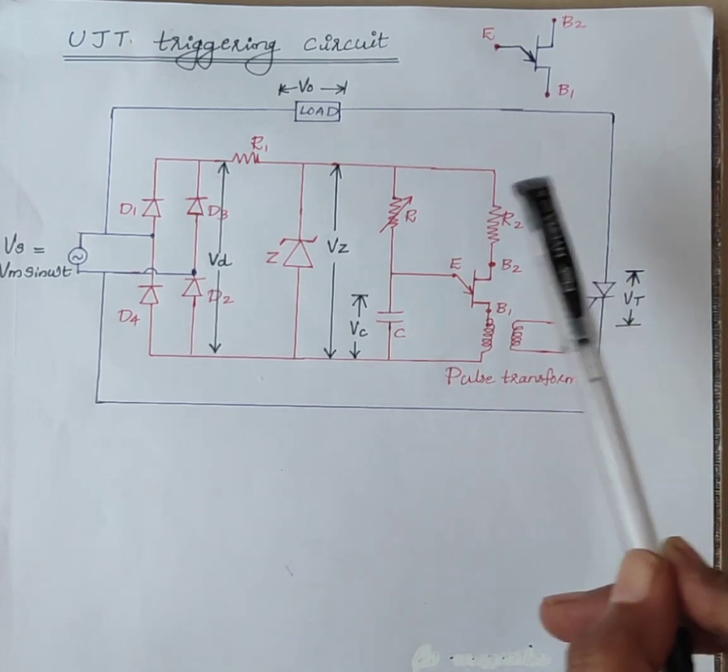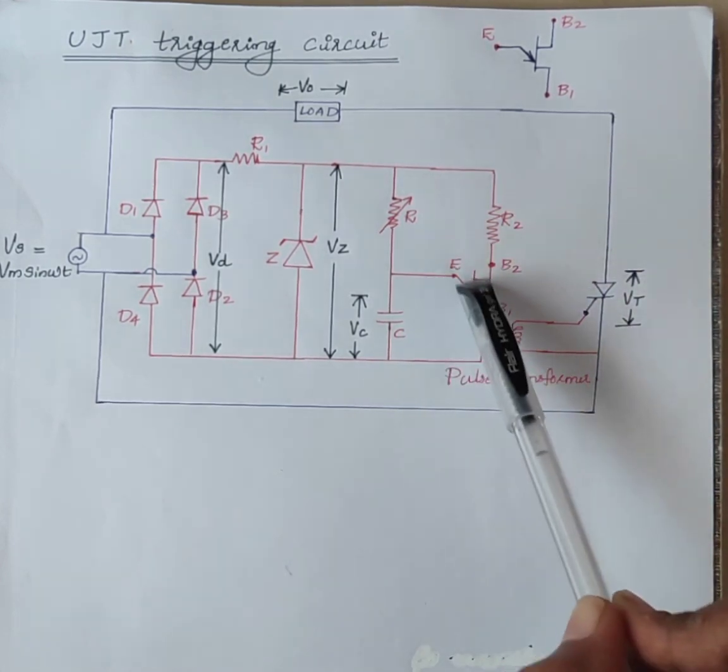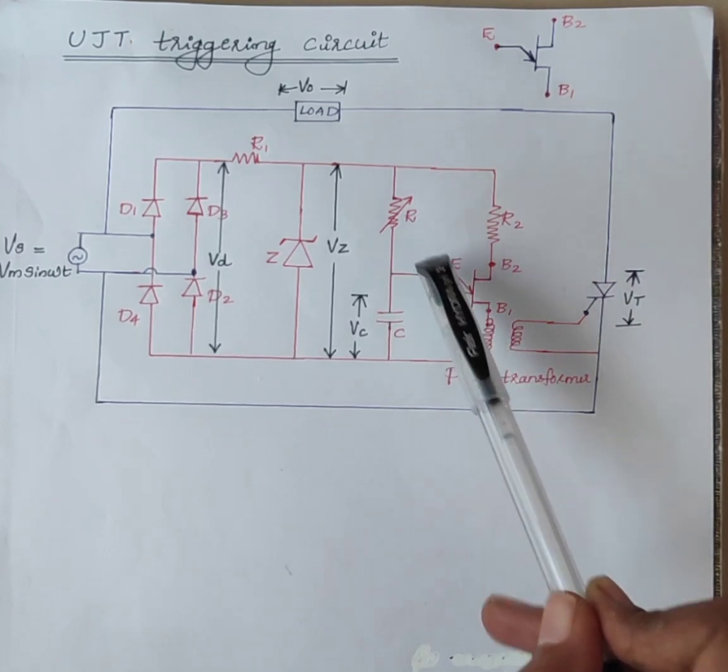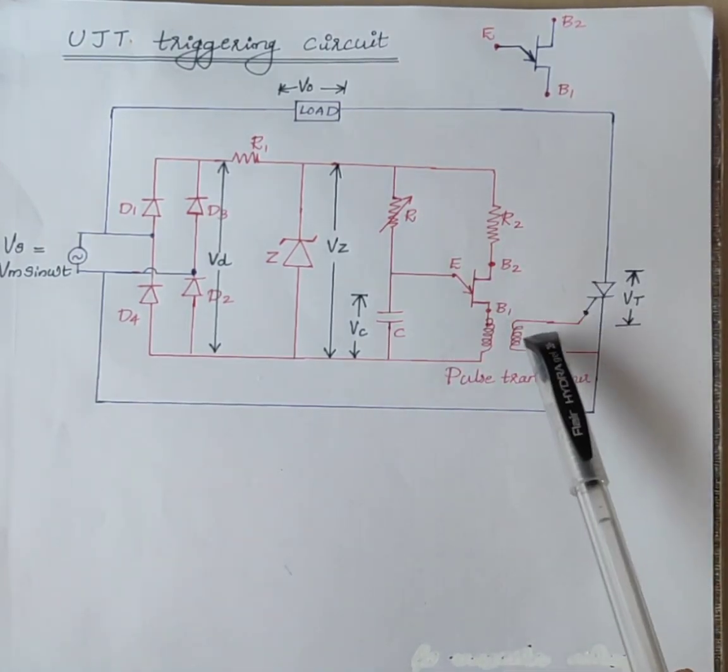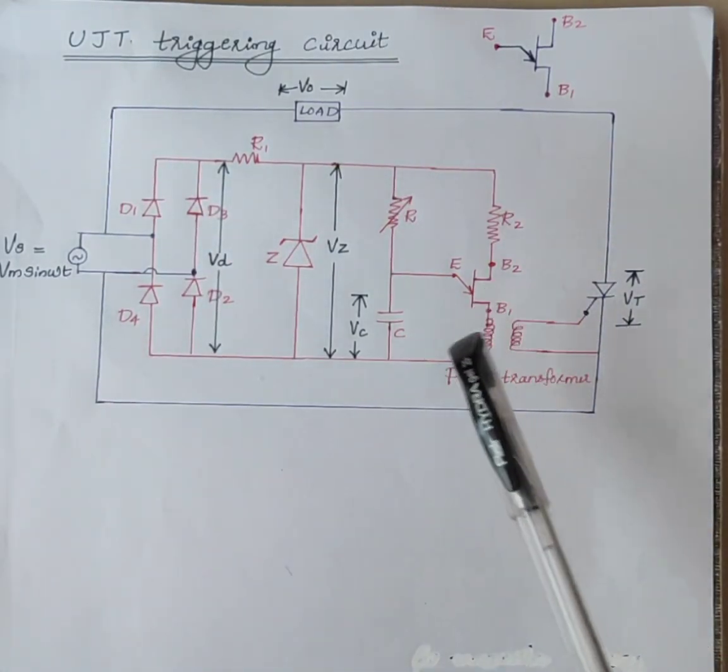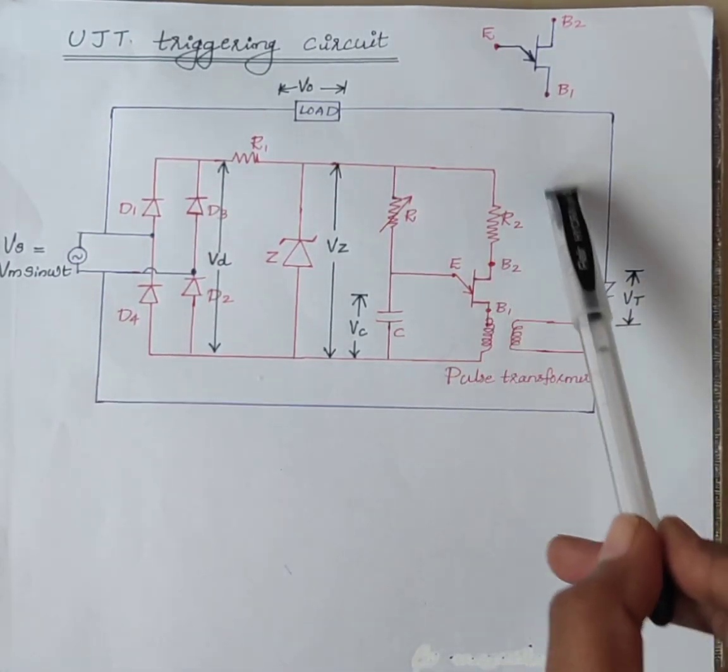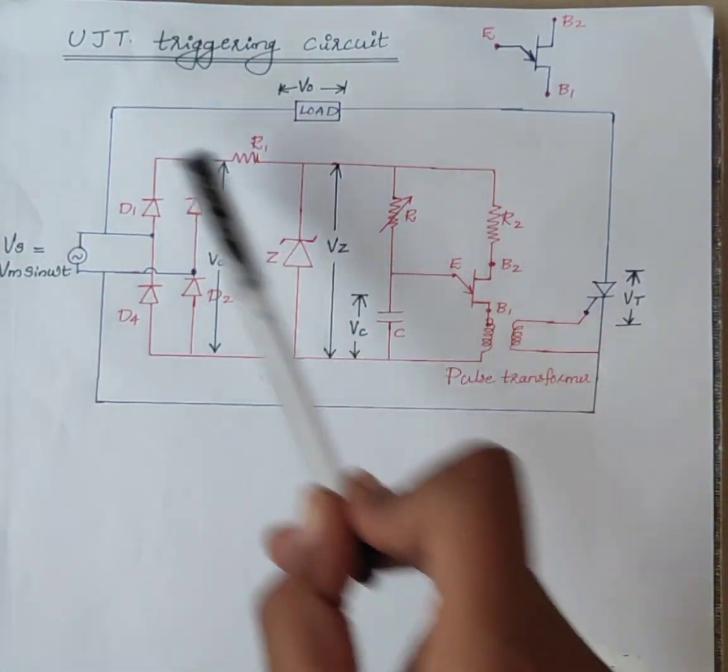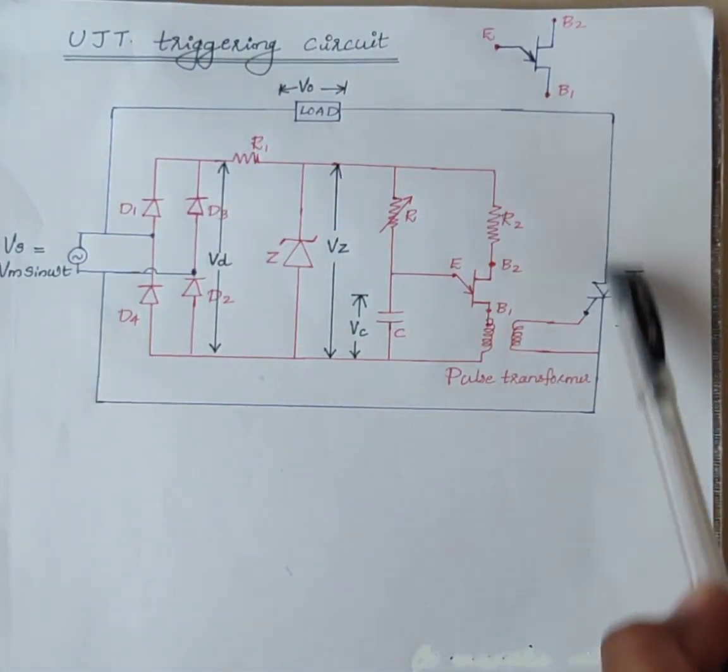One common application of UJT is the triggering of other devices such as SCR, TRIAC, etc. The figure shows the circuit diagram of UJT triggering circuit. This one is the control circuit in red color and this one is the power circuit.